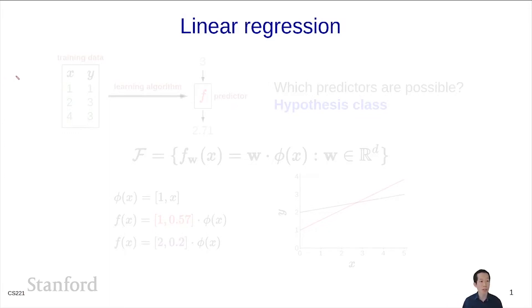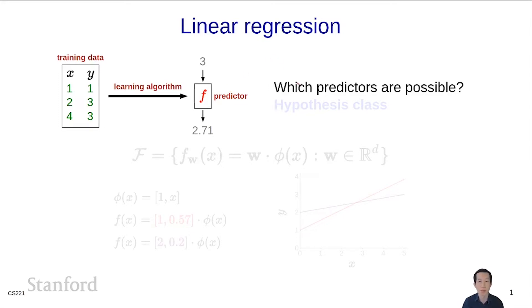Remembering regression, we're given some training data. We have a learning algorithm that produces a predictor. And the first key question, or design decision, is which predictors is a learning algorithm allowed to choose from? That's the question of the hypothesis class.